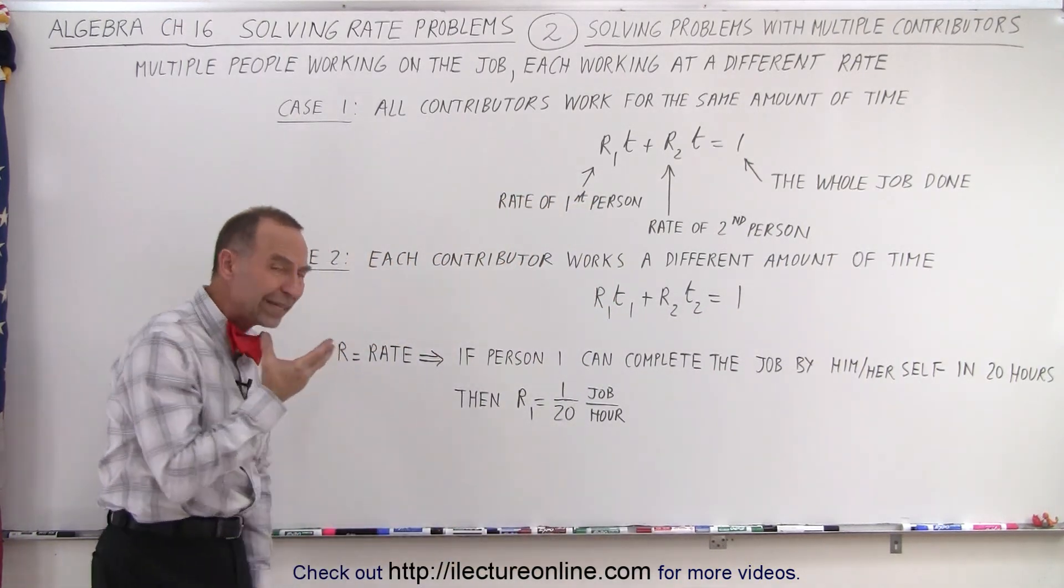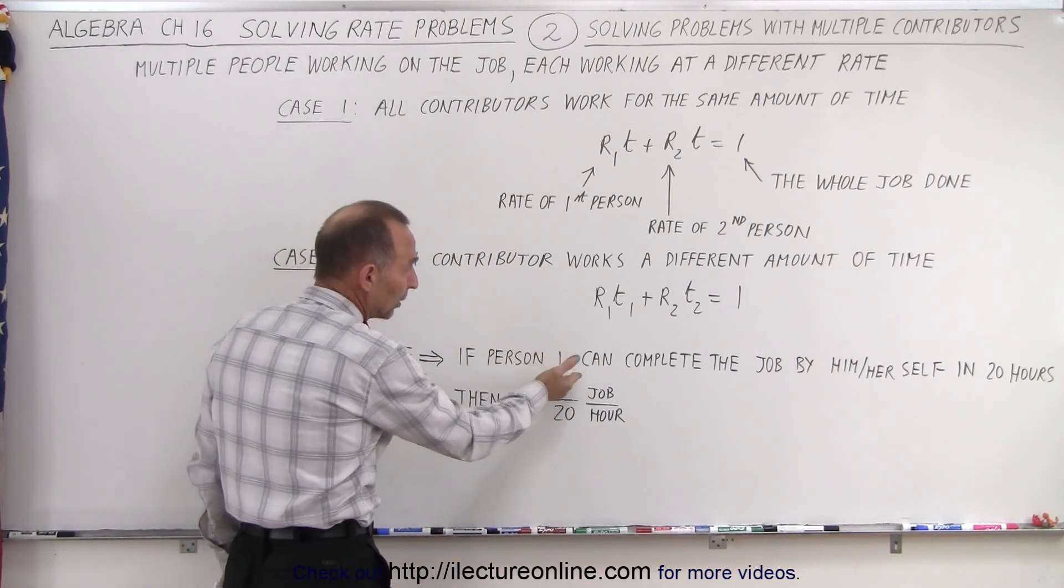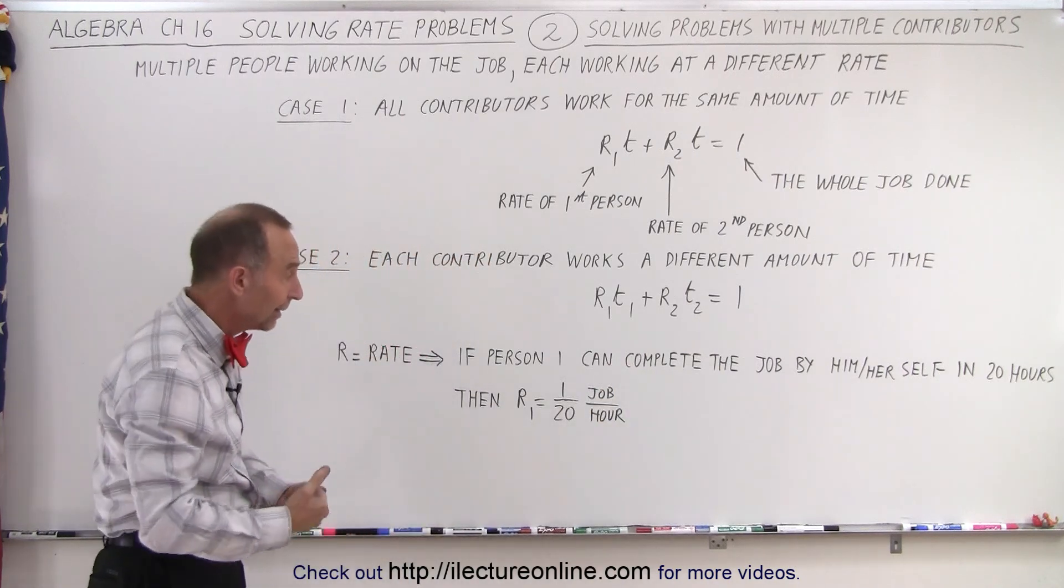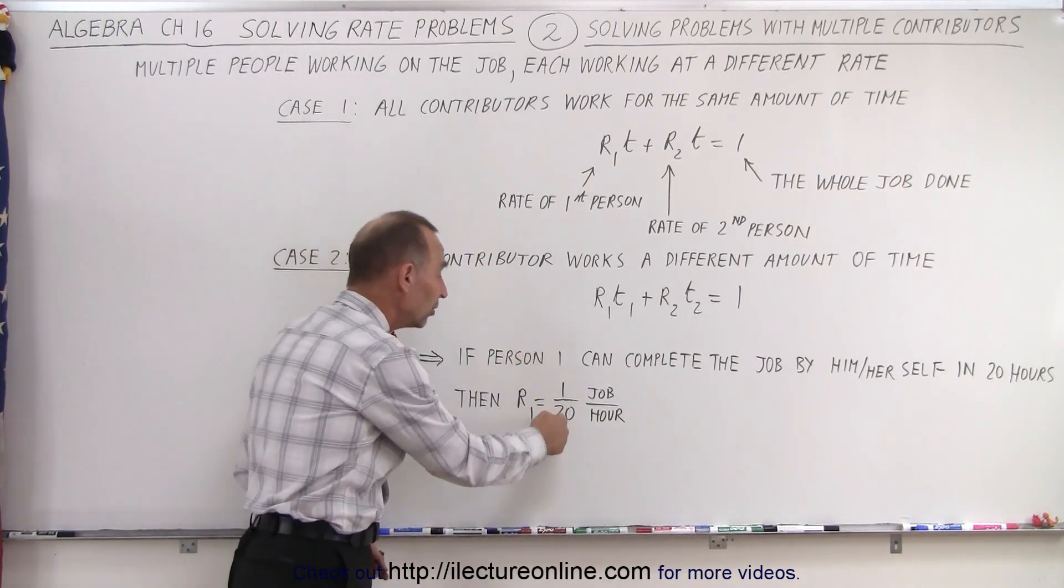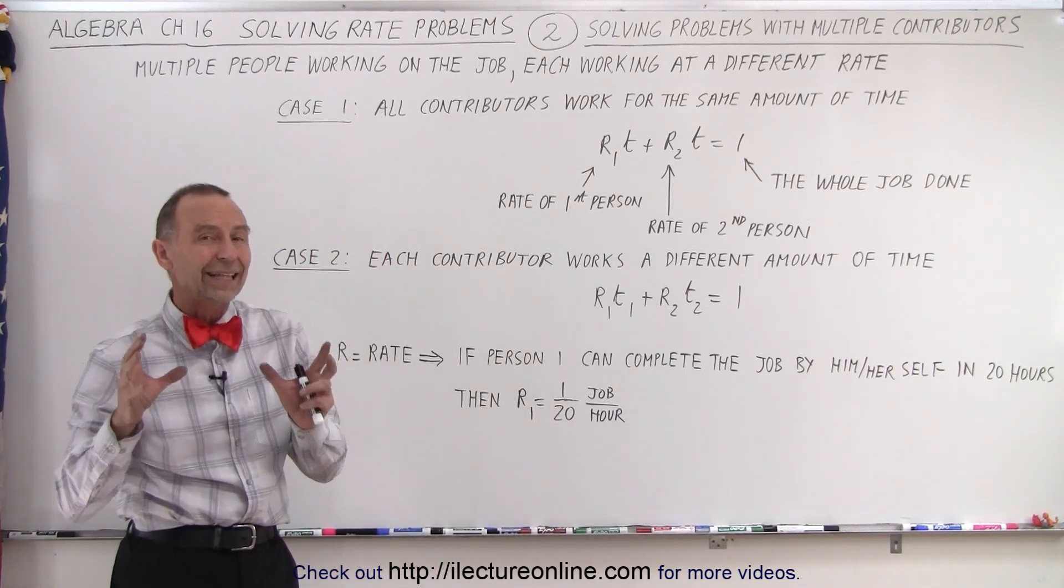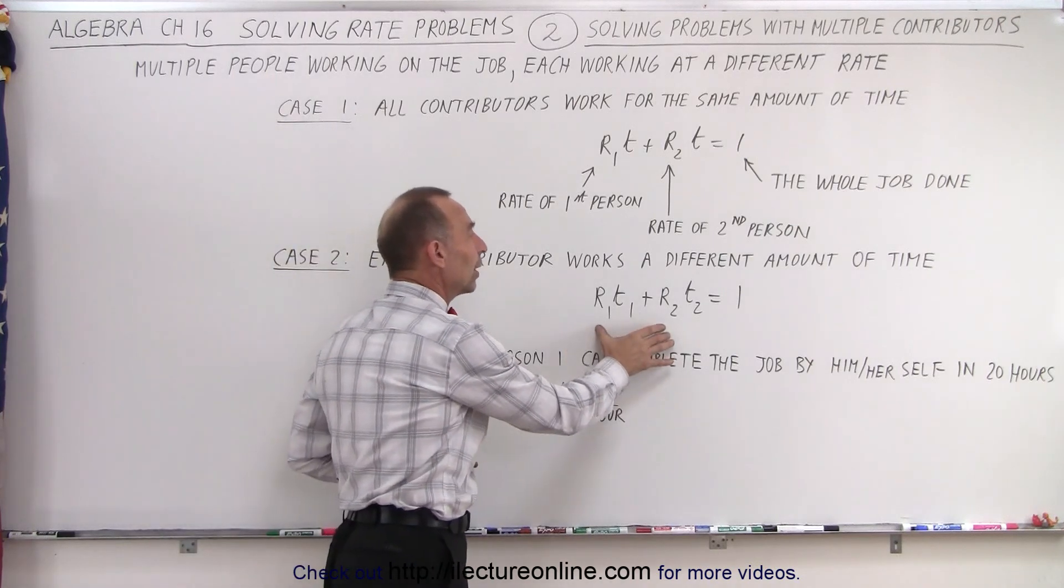So, how do we calculate the rate? Well, the rate is calculated - for example, if person 1 can complete a job by themselves in a total of 20 hours, then the rate is 1/20th of the job done each hour. And so that's how we then calculate the rate of each person. We then plug that into the equation.